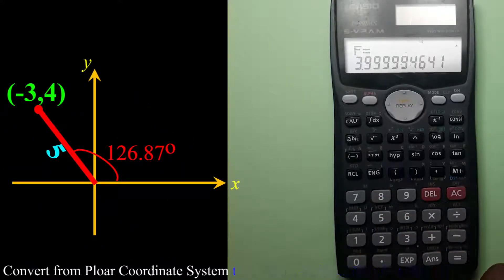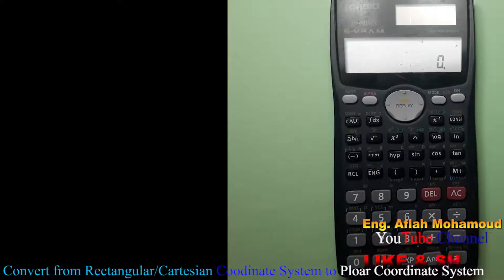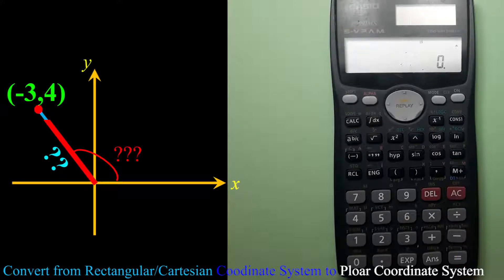So I will use 4. So negative 3 comma 4 is the coordinate of this point. But when I want to change from the rectangular to the polar coordinate system, let me use this same question and let me check whether it will give me the polar coordinate system or not.